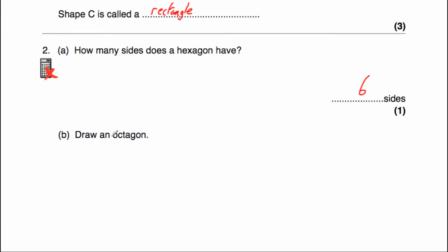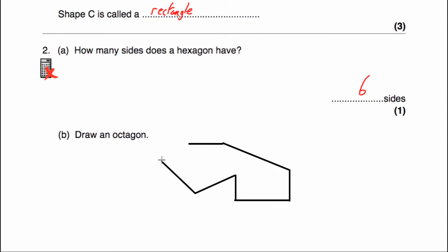Part B says draw an octagon. An octagon is a polygon with eight sides — eight straight sides. So let's draw a shape with eight straight sides: one, two, three, four, five, six, seven, eight. That's an octagon. Alternatively, you could draw a regular octagon — that's an octagon where all the sides are the same length.